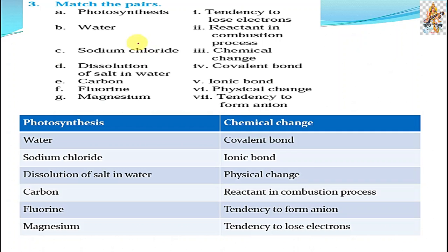Question three: Match the pairs. Here is the answer: Four gives covalent bond. Chemical changes: covalent bond. Sodium chloride: ionic bond. Dissolution of salt in water: it is a physical change. Carbon: reactant in combustion process. Chlorine: tendency to form anion. Magnesium: tendency to lose electrons. Photosynthesis: is a chemical change.